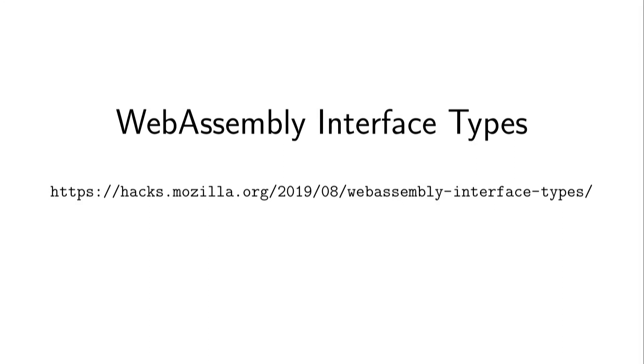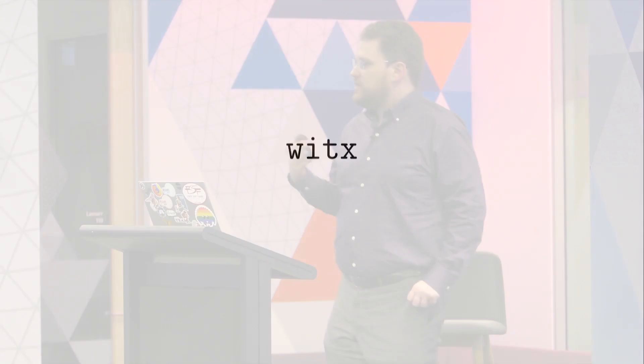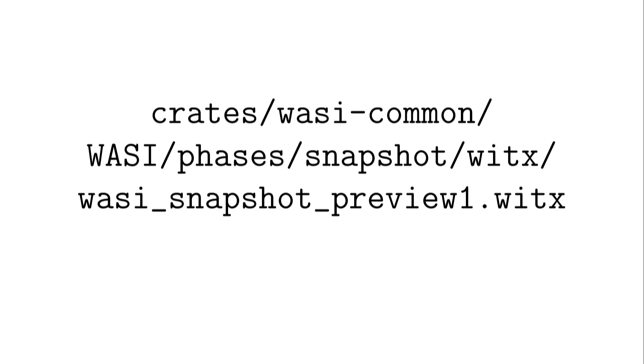This is going to use WebAssembly interface types — there's a wonderful introduction by Lynn with code cartoons that explains how and why. We'll be using the WitX generator, which is a cross between WebAssembly interface types and some extensions to make it usable today. The path within WasmTime to the current preview snapshot is under the wasm-common crate, which has a submodule for the all-caps WASI repository from the WebAssembly organization. That has, in its snapshot phase, the snapshot preview one WitX file.